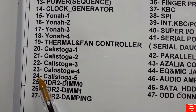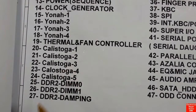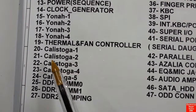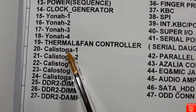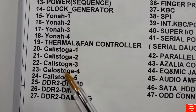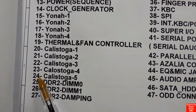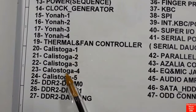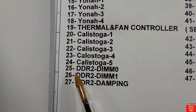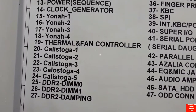Here we have the GMCH or north bridge, the Calistoga, from page twenty to page twenty-four. The north bridge is always near to the CPU on the motherboard. Here we have the DDR2 — this is the RAM or random access memory — in pages twenty-five, twenty-six, and twenty-seven.